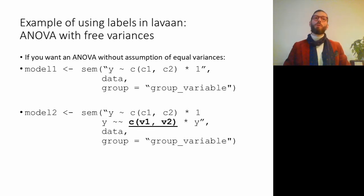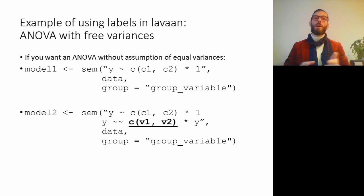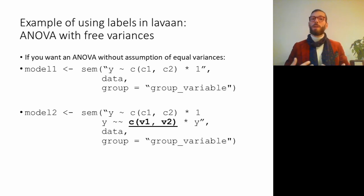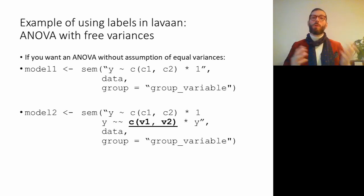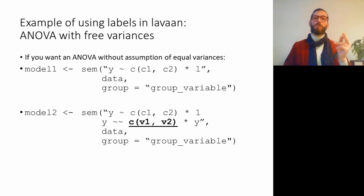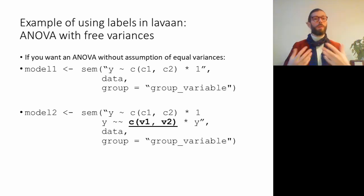A cool application of the multi-group approach: one assumption of a t-test or ANOVA is equal variances across groups. If this is violated, traditional methods offer no solution, but SEM makes it simple. Compare two models — the first predicts y from a grouping variable with equal variances; the second estimates the variance of y freely across groups, labeling the variance v1 in group 1 and v2 in group 2. This allows comparison of group means without assuming equal variances — much more flexible than an off-the-shelf t-test or ANOVA.